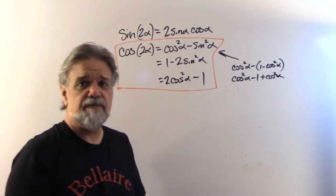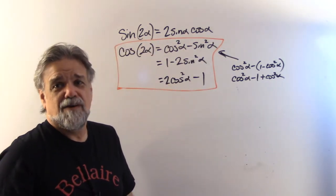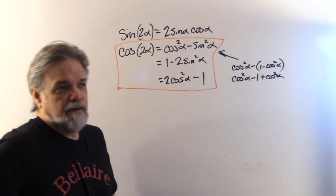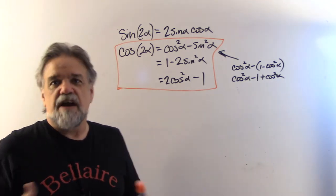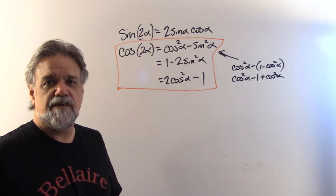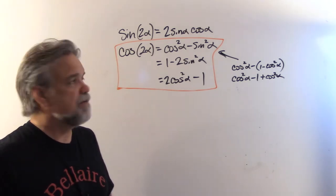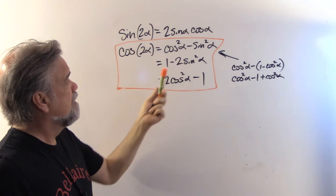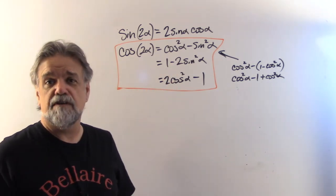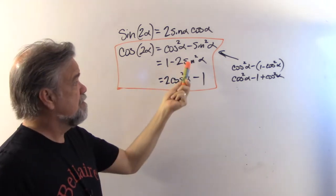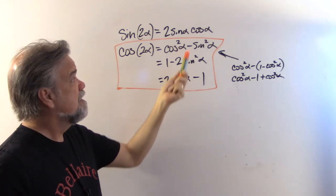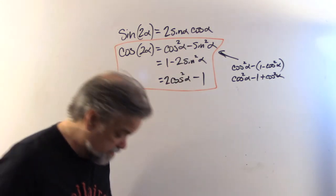You might think you only need one identity, and you're kind of right — but having all three actually makes life easier. There are times when you'll only have the sine of α, and times when you'll only have the cosine of α. So sometimes this form will be easier to use, and sometimes a different one will be.